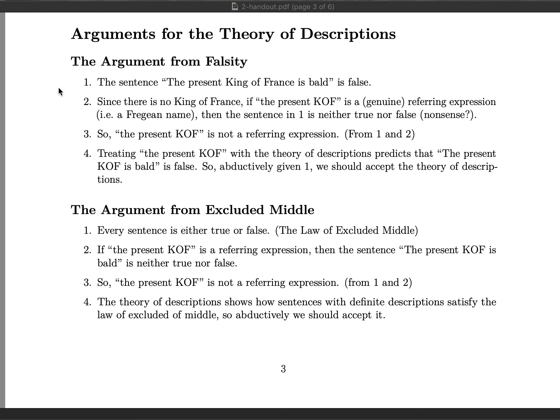As we all should know, there is in fact not a present king of France. The king of France was killed several hundred years ago — a bit over 200 years ago. So the definite description 'the present king of France' has no object in the world that it picks out. The sentence we're considering as premise one is: 'The present king of France is bald.'